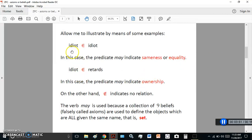But let's continue. So, for example, idiot is an element of idiot. By the way, element hasn't even been defined yet. In this case here, the predicate may indicate sameness or equality. You can say idiot is an element of retards, or is in retards. And in this case, the predicate may indicate ownership. On the other hand, an epsilon with a stroke through it indicates no relationship. So, for example, intelligence or mainstream academic is not an element of intelligent people, right? You could actually have a relation like that.